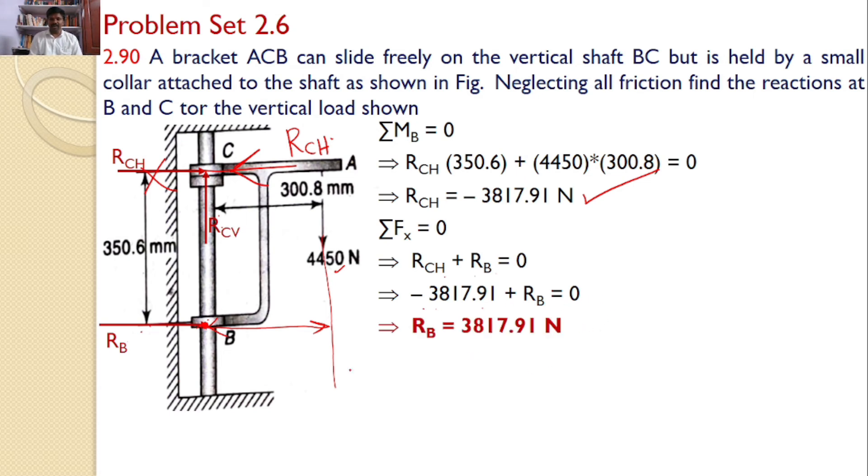Hence, RB is equal to 3817.91. I am getting positive, so this direction is right direction and the RB is equal to 3817.91 Newtons is one of the answers.